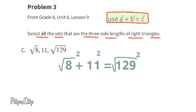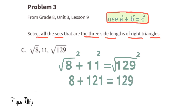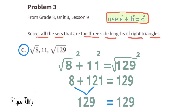For set C, the side lengths are √8, 11, and √129. The square root of 8 squared is 8, eleven squared is 121, and √129 squared is 129. Since 8 plus 121 equals 129, this can be a set of side lengths for a right triangle.